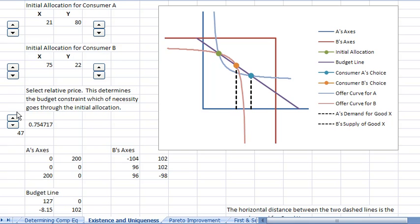And look what happens. I'm not going to lower the relative price. Look what happens to the excess demand. As I lower the relative price, the excess demand gets bigger. As I raise the relative price, the excess demand gets smaller. And I'm going to raise it a lot now.